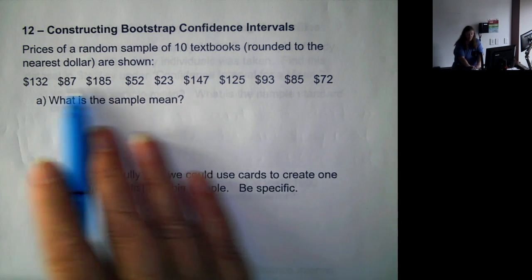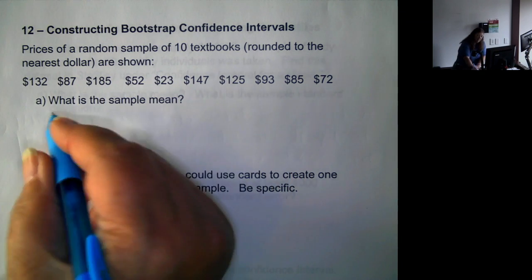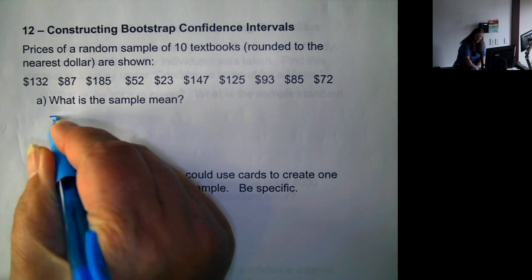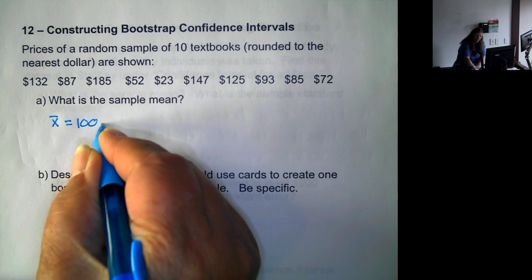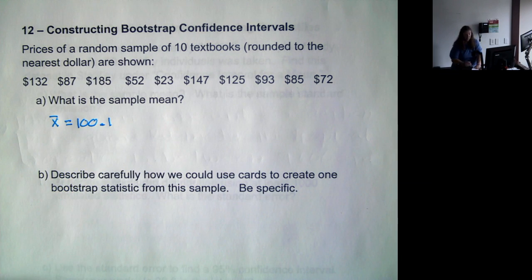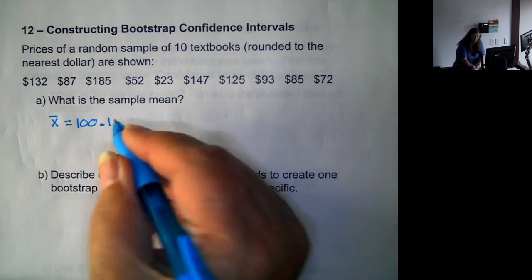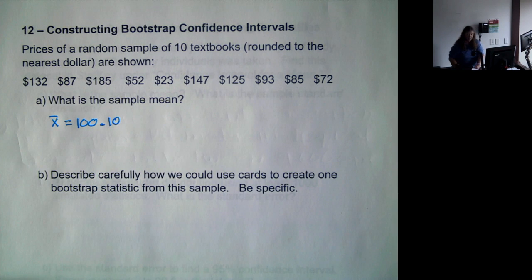Remember, for the sample mean, you add them up, divide by 10. If we do that, the sample mean is 100.1, so $100.10 is the average price.